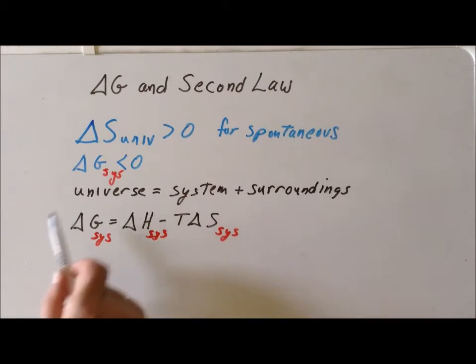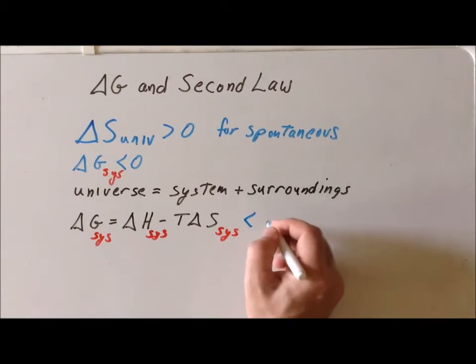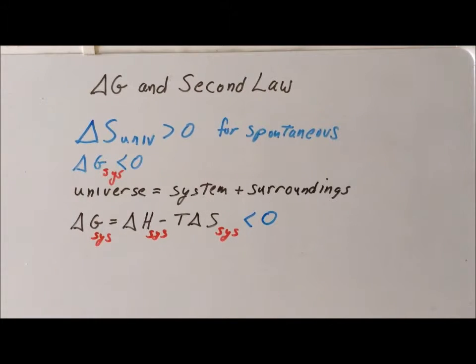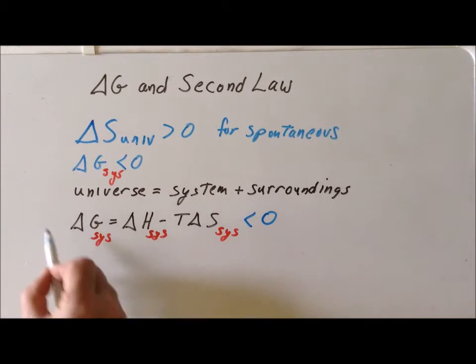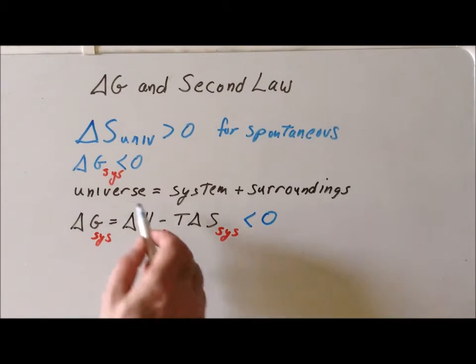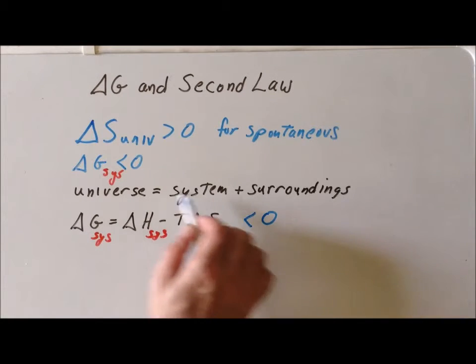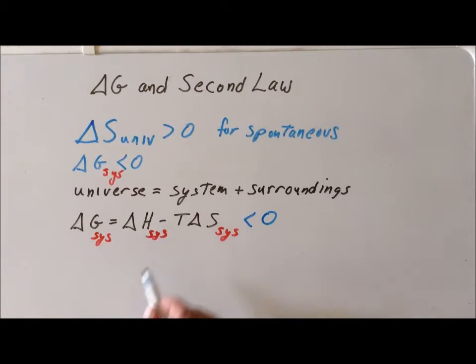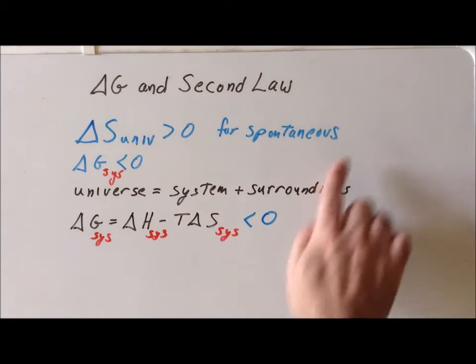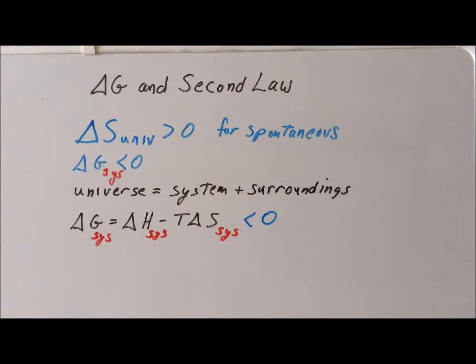We can incorporate our definition of delta G into our condition that delta G has to be less than zero for a spontaneous process by combining that into an inequality. That's our first step. From now on, we don't need to use the delta G system on the left-hand side, because we have an equivalent expression for it right here. Delta H of the system minus T delta S of the system is less than zero for a spontaneous process. We're not going to keep writing for spontaneous, but that's the implication for each of the steps.